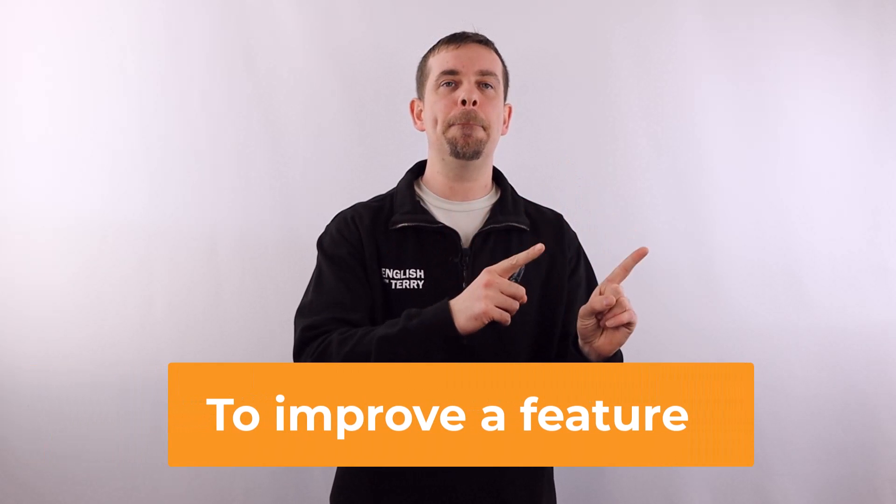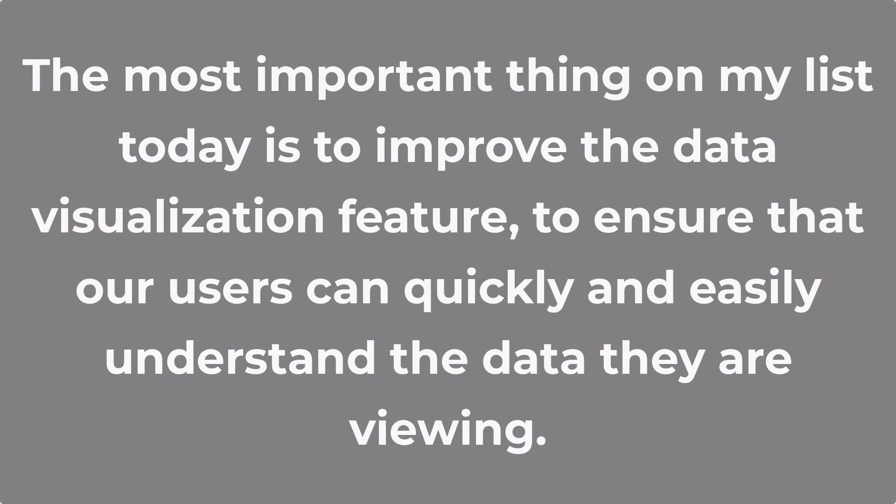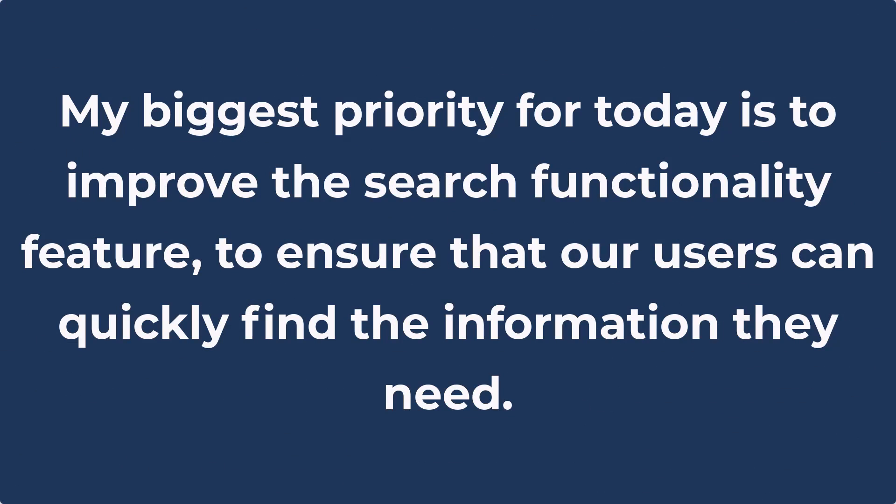The first expression we can use is to improve a feature — for example, the user authentication and authorization, data visualization, or search functionality. For example: 'My biggest priority for today is to improve the user authentication and authorization feature, to ensure that our users' data is secure and that access is granted only to those who are authorized.' Or: 'The most important thing on my list today is to improve the data visualization feature, to ensure that our users can quickly and easily understand the data they are viewing.' Or: 'My biggest priority for today is to improve the search functionality feature, to ensure that our users can quickly find the information they need.'